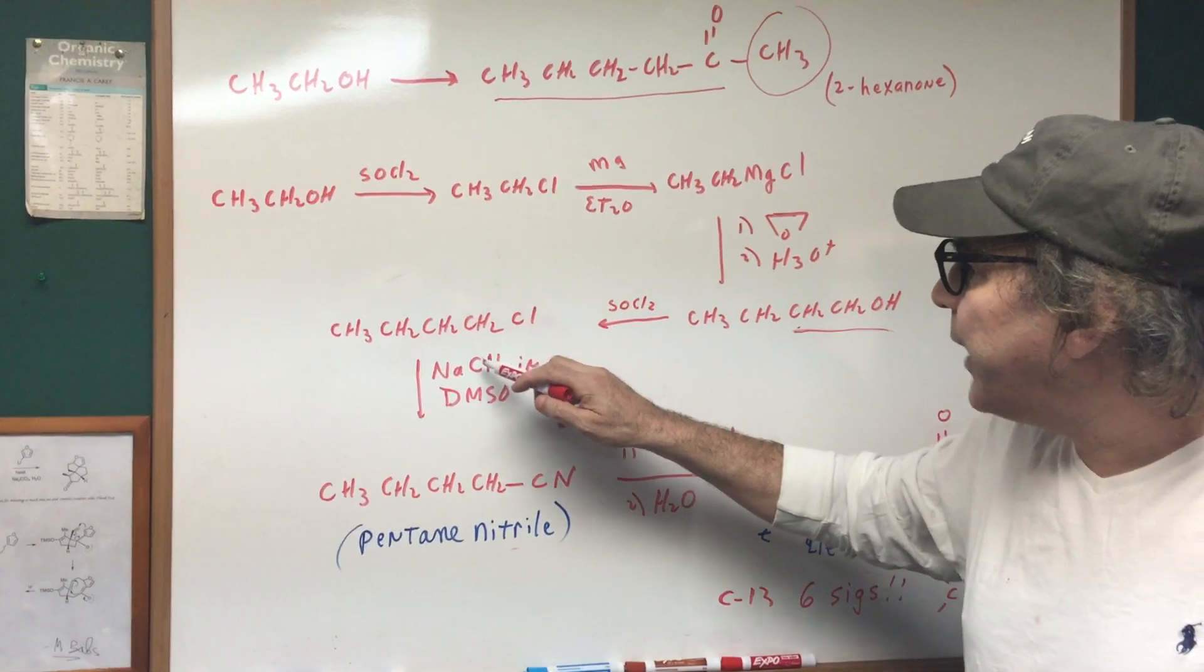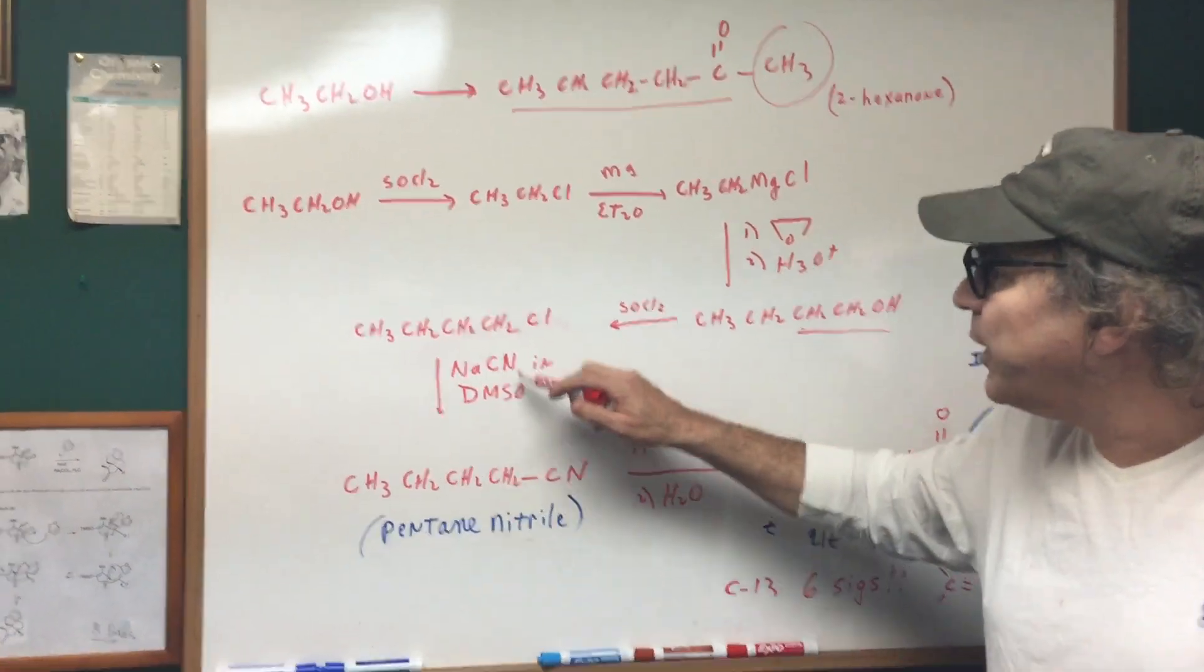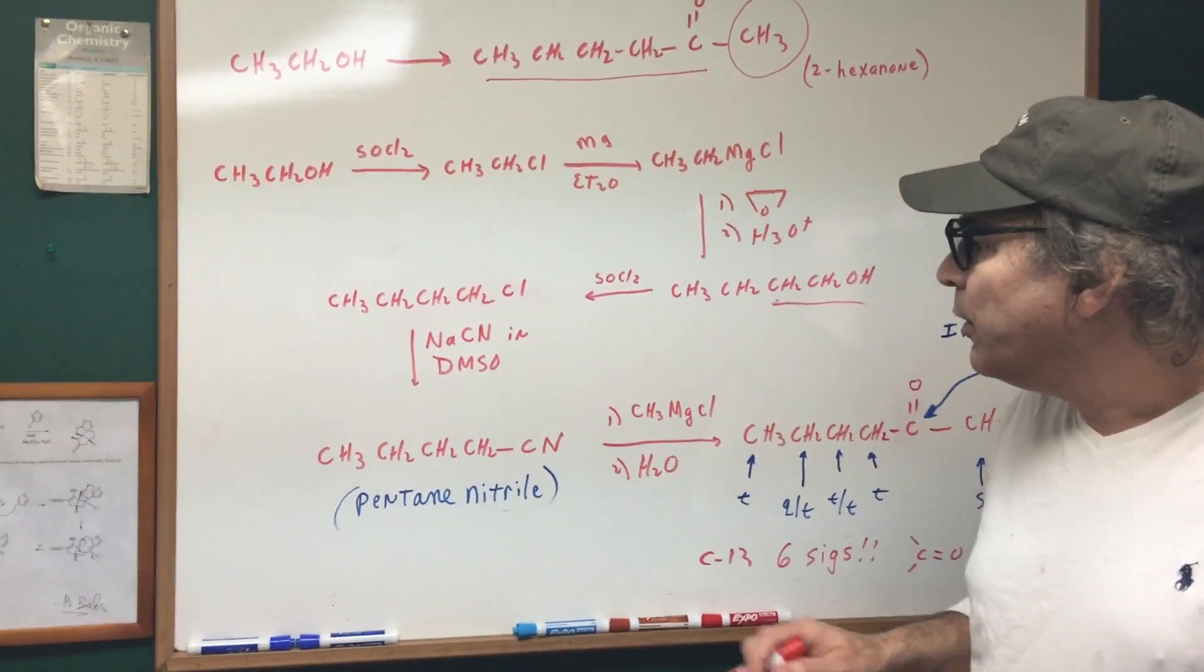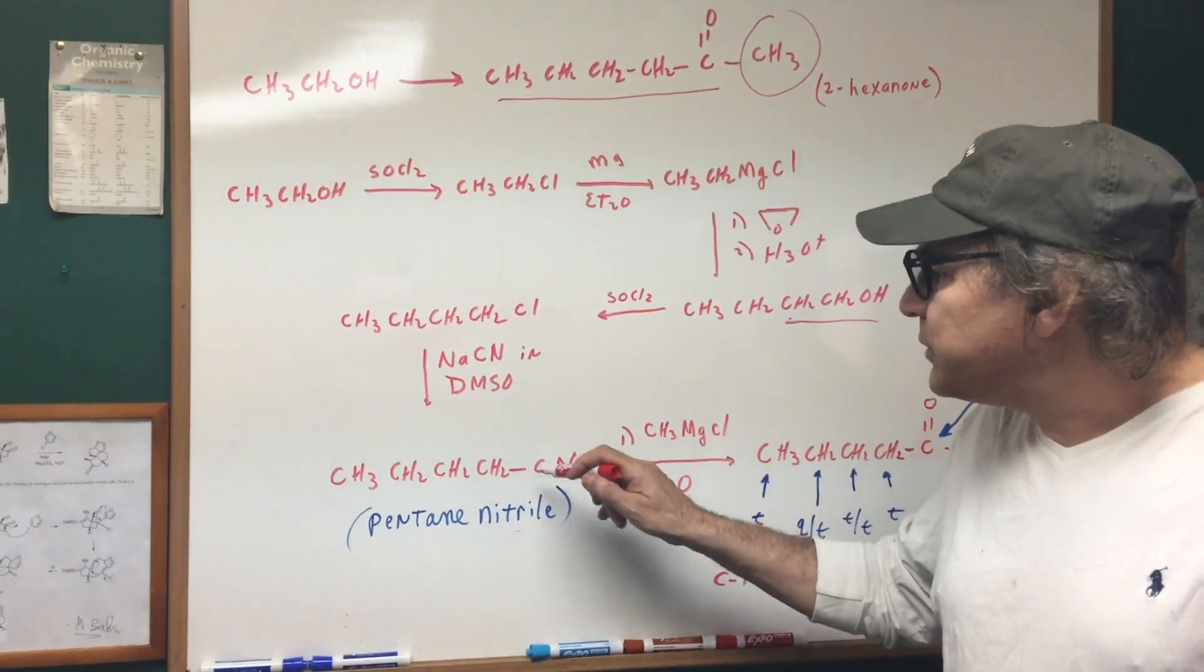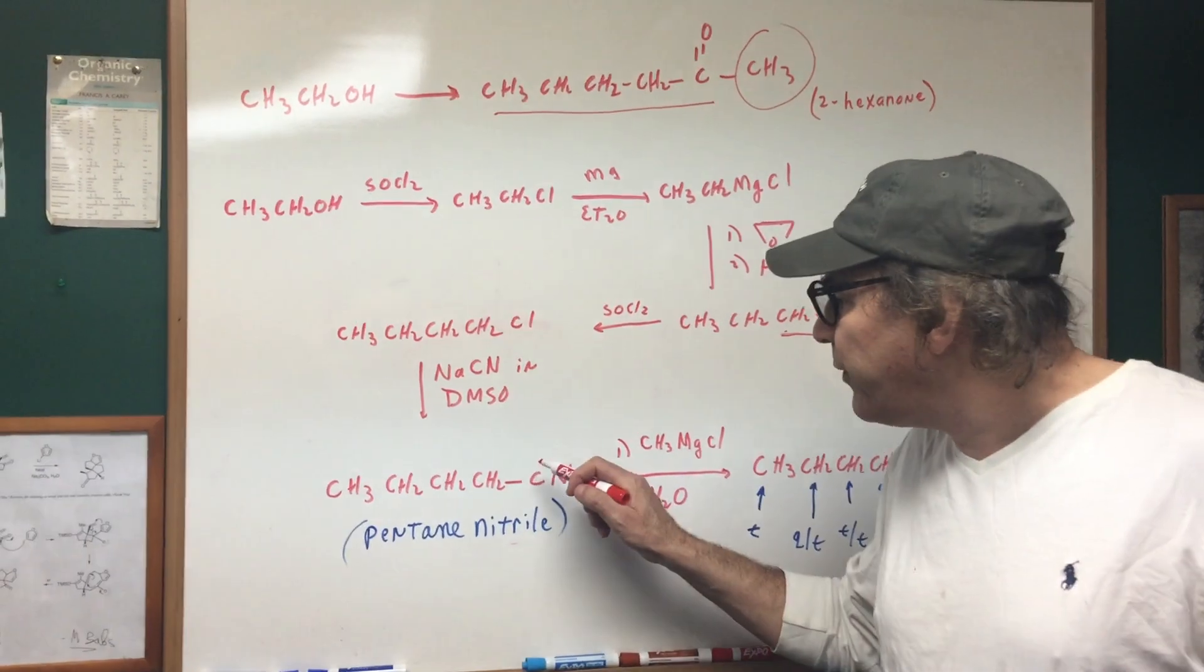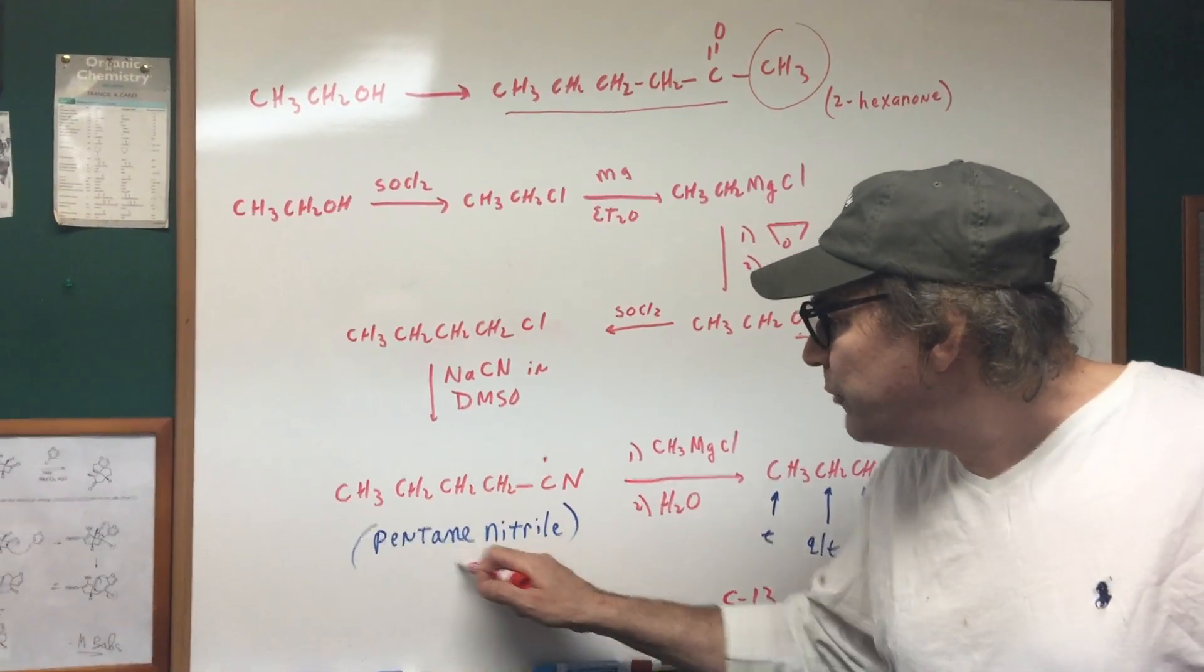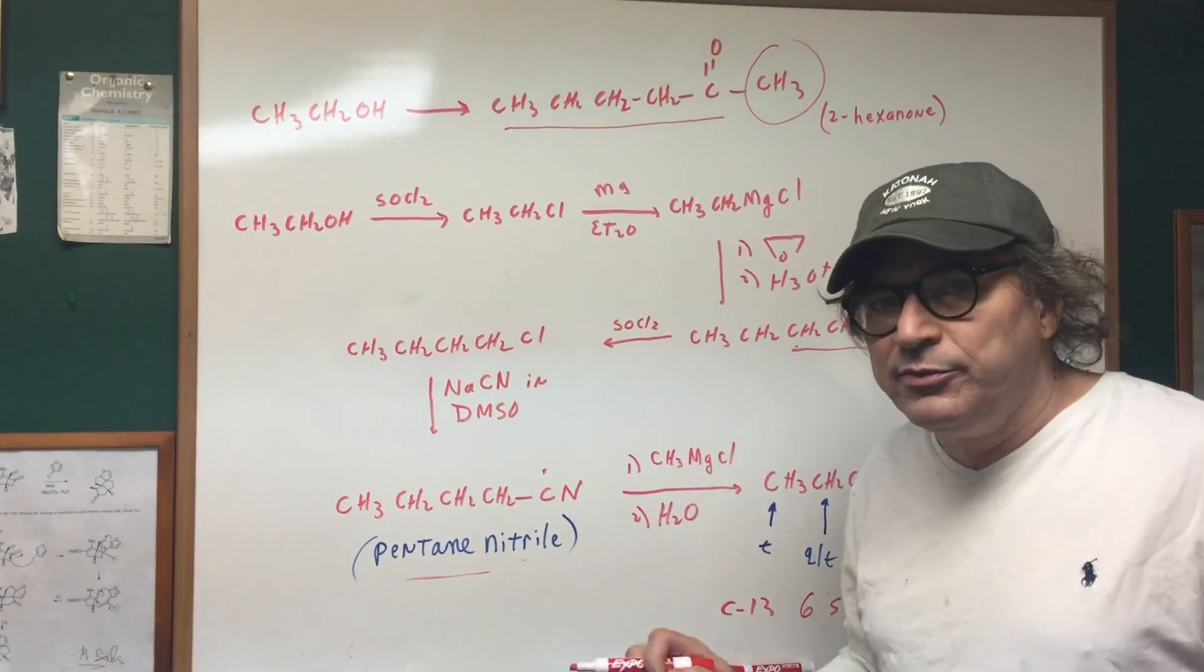SOCl2 again, and then there's the nitrile. I put in the nitrile with NaCN, and that puts on the CN now. Now, the way you would name this is you always call position one where the nitrogen is. So one, two, three, four, five. So this would be called pentane nitrile.